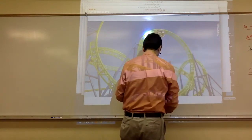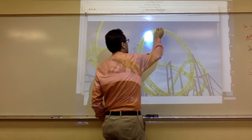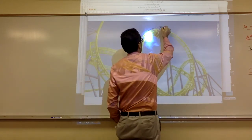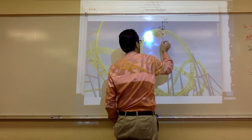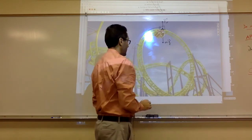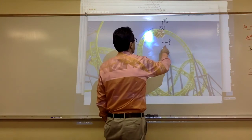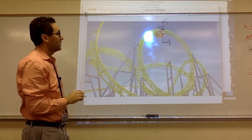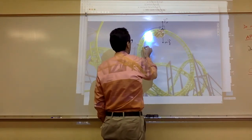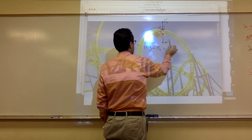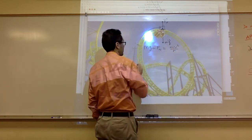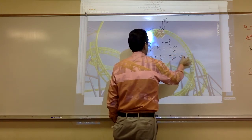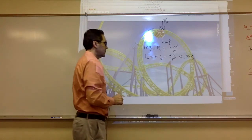If the cart is on top of the track, the normal force is up and MG is toward the center. Since the net centripetal force is toward the center, MG has to be bigger than FN. So MG minus FN equals MV squared over R, which means FN equals MG minus MV squared over R — definitely less than MG. That's why you feel lighter on top.